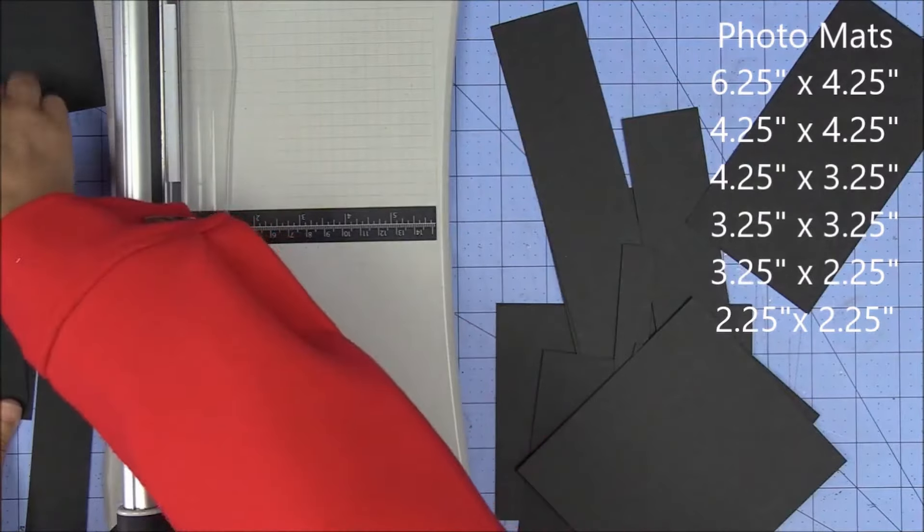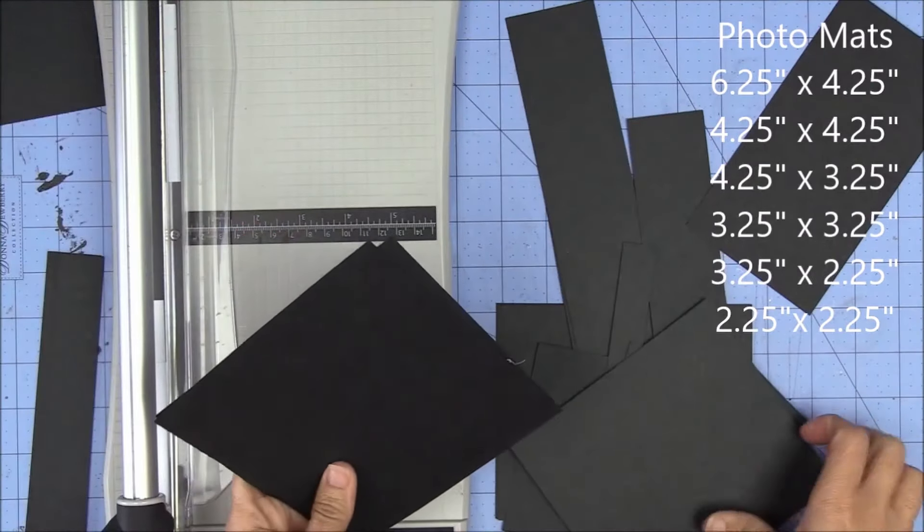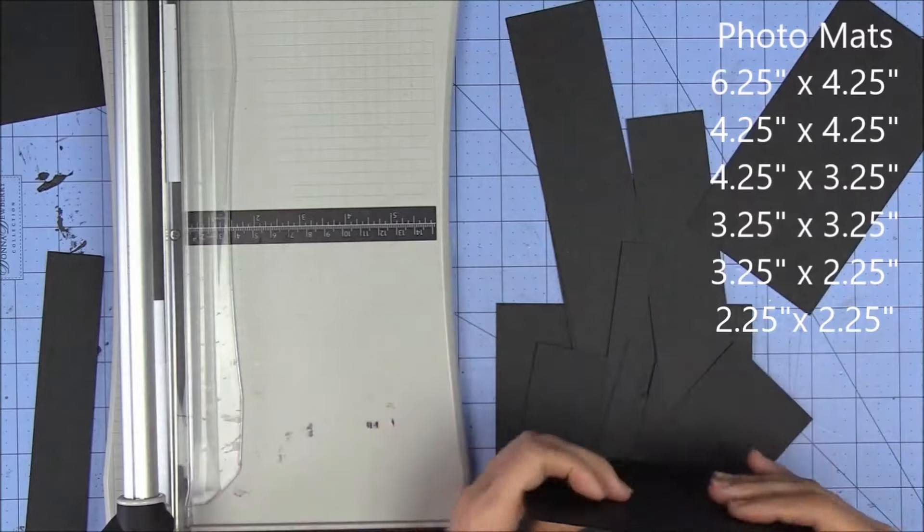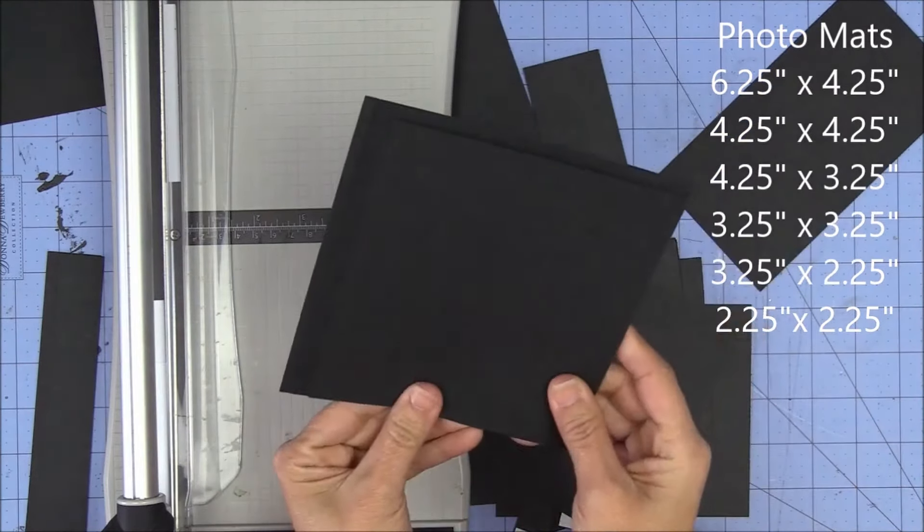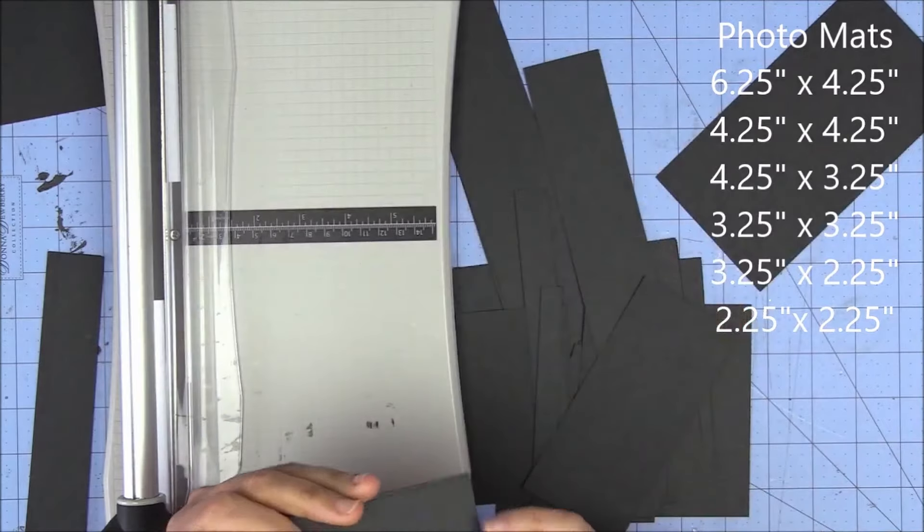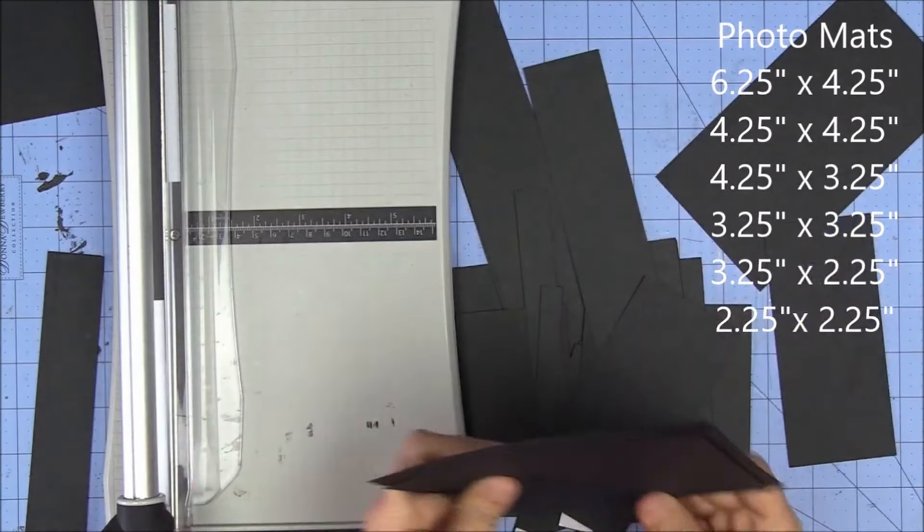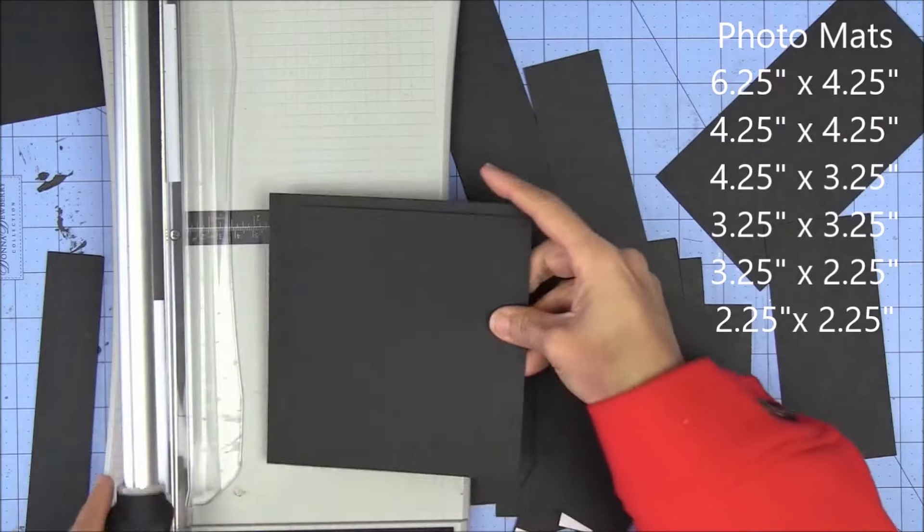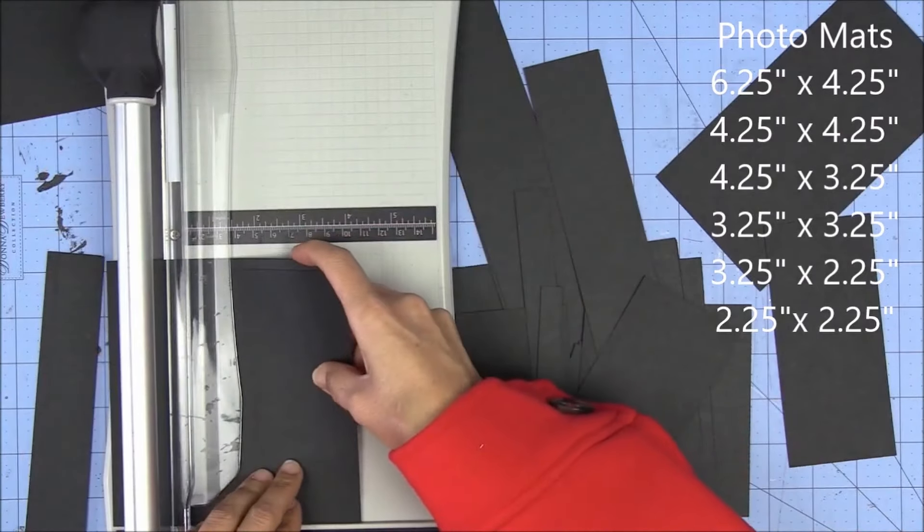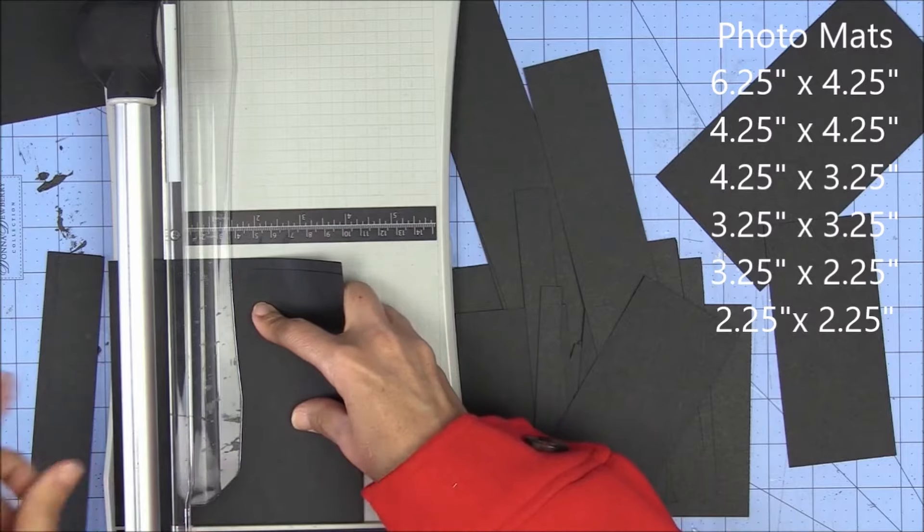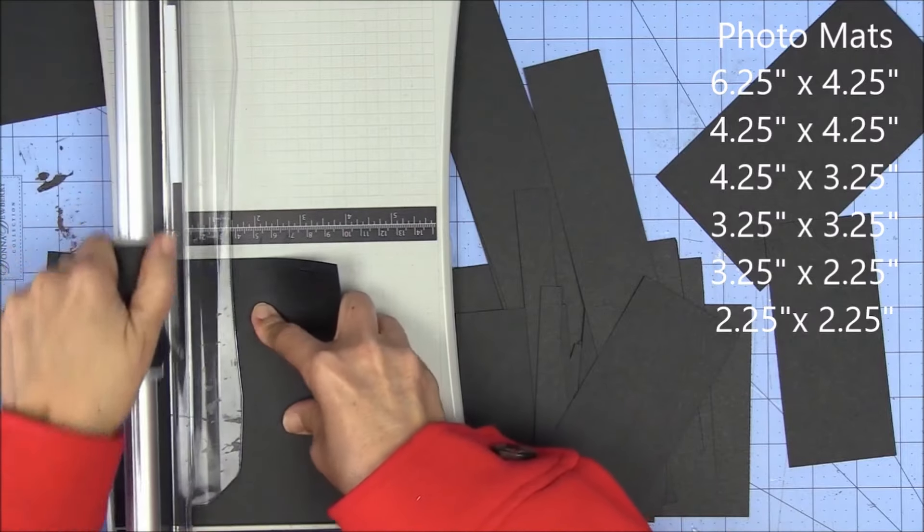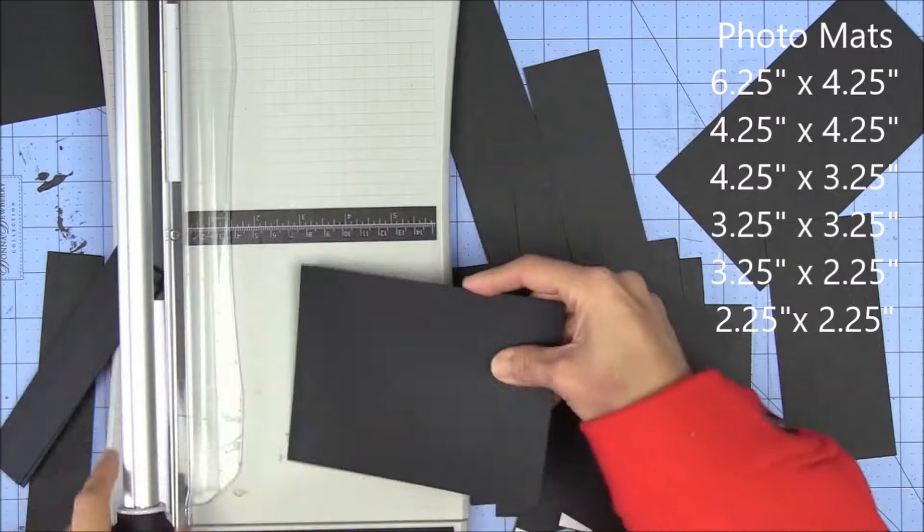Alright, then I grab the second largest stack of paper. You don't have to stack them like this to cut. I just do it because I am a little bit lazy and I like to take a shortcut. Let's just call me the shortcut gal, not the lazy gal. My second measurement, second largest, is 4 and a quarter by 4 and a quarter.